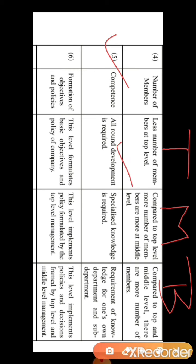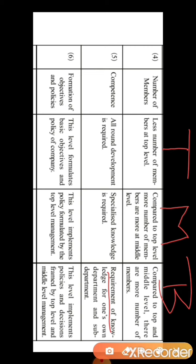The fifth point is competence, meaning the quality of being suitable. At the top level management, all-round development is required — persons like the board of directors should have knowledge of all subjects of business and the world, since they set the mission, vision, and frame different policies and plans. At the middle level management, specialized knowledge is required — for example, a finance manager should have proper knowledge of finance, and a marketing manager of marketing. At the bottom level, knowledge of one's own department and sub-department is required.